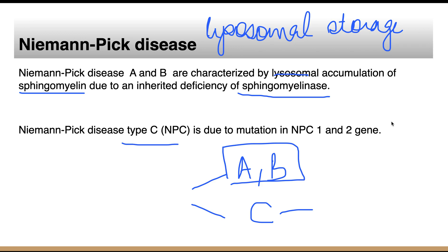However, in type C, there is a mutation in the NPC1 and NPC2 genes. These are responsible for the transport of cholesterol. In Niemann's Pick disease type C, there is no role of sphingomyelin.